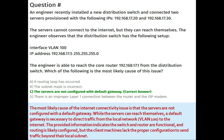Question one: an engineer recently installed a new distribution switch and connected two servers provisioned with the following IPs: 192.168.17.20 and 192.168.17.30. The servers cannot connect to the internet but they can reach themselves. The engineer observes that the distribution switch has interface VLAN 100 with IP address 192.168.17.5 and subnet mask 255.255.255.0.